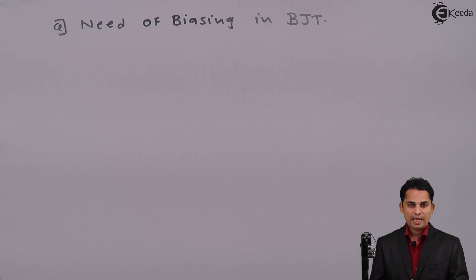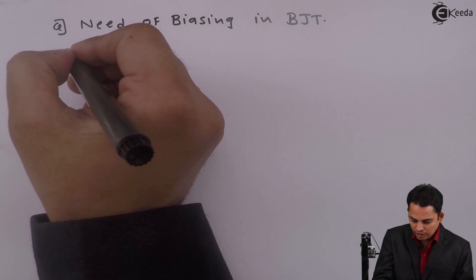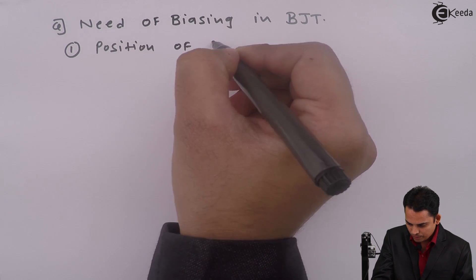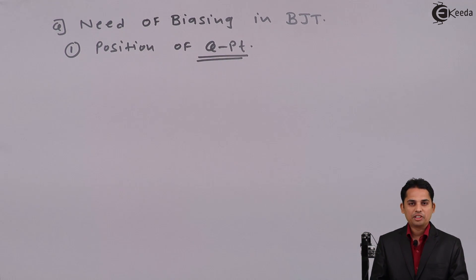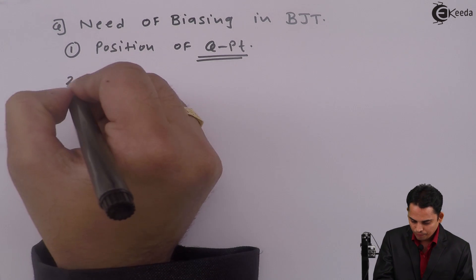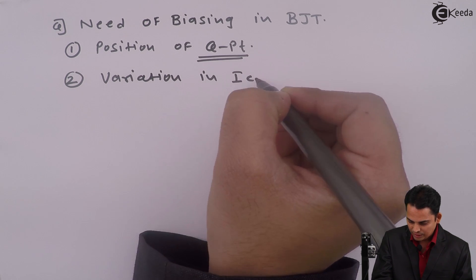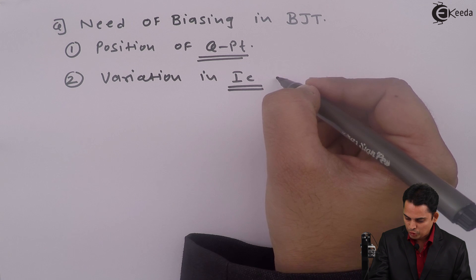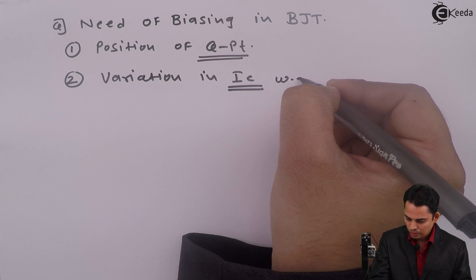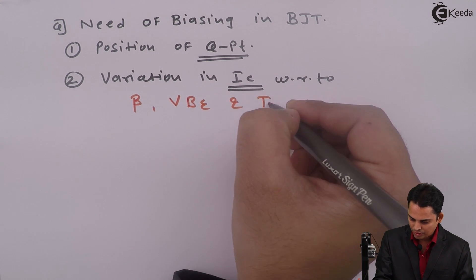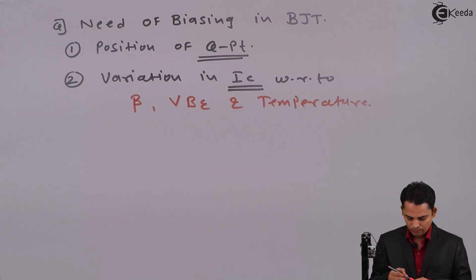Need of biasing can be classified in two things. The first thing is position of Q point. And the second point is variation in IC, that is collector current, with respect to beta, VBE, and temperature. So these are two important points because of which we go for biasing in BJT.